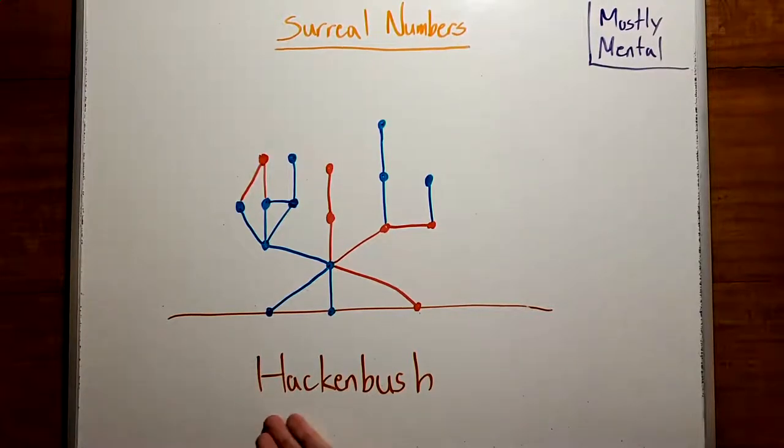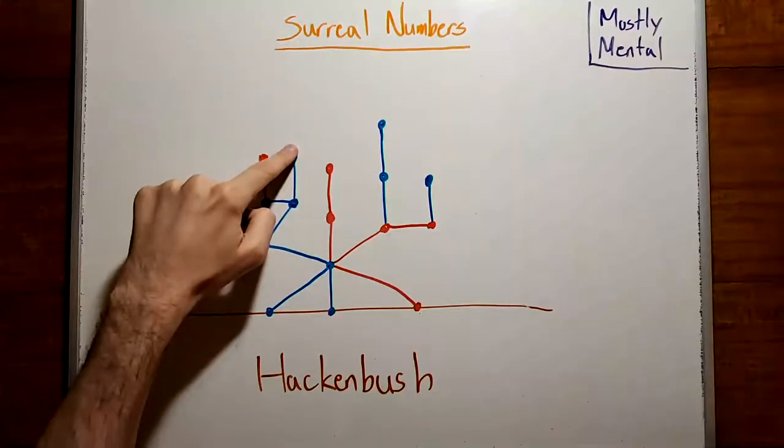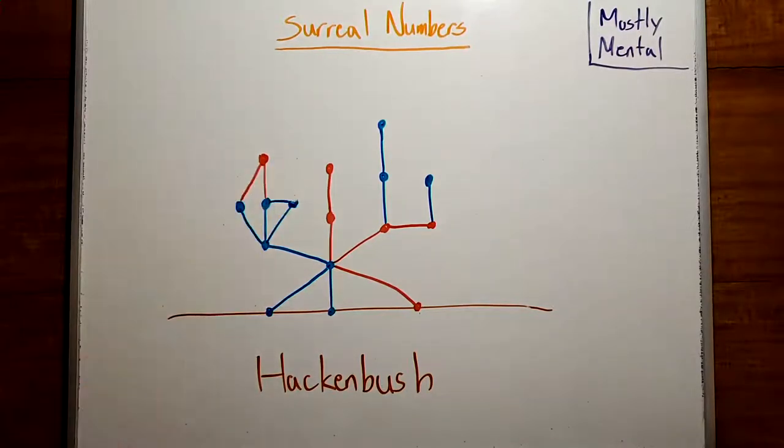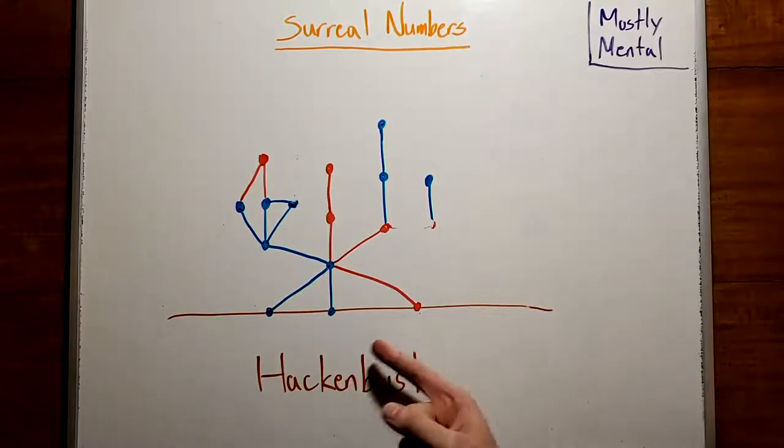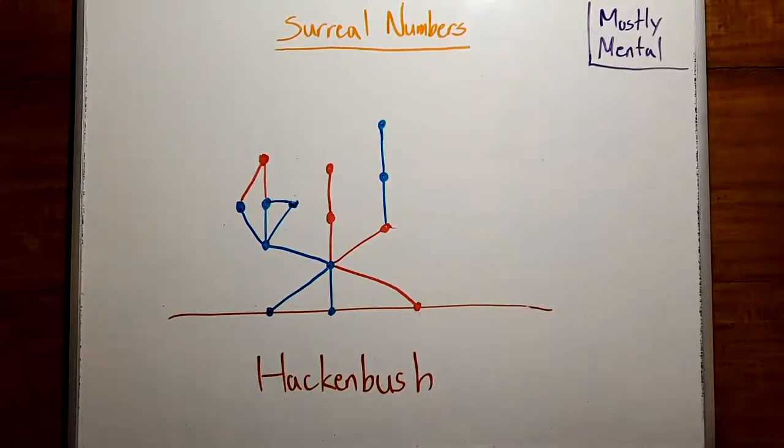Let's consider a game called Hackenbush. We have two players, blue and red, and a bush made out of colored edges. The players take turns cutting edges of their respective colors. So blue might cut this edge, and red might cut this one. And any edges like this one that get disconnected from the ground disappear as well. And the last player who can make a move wins.